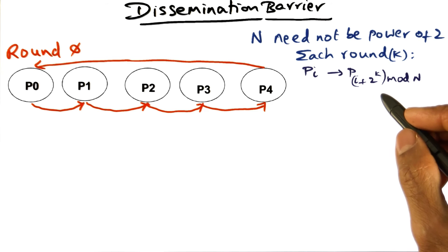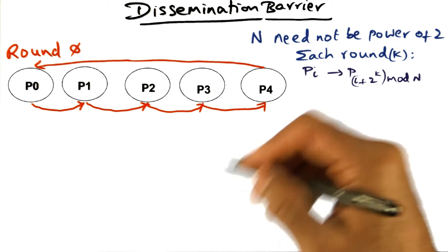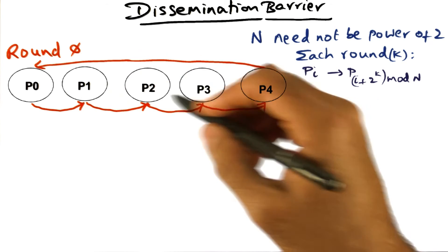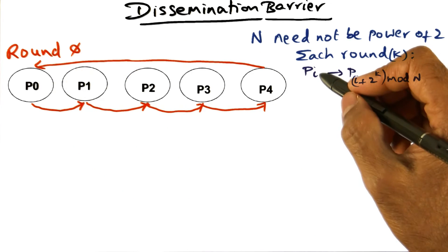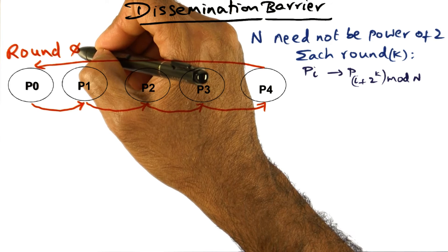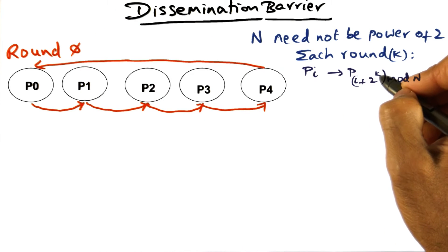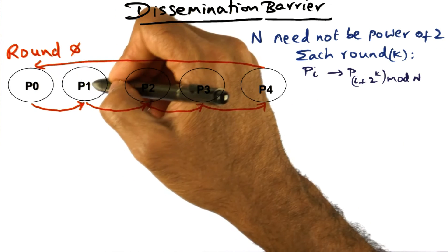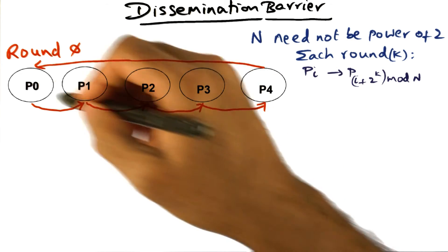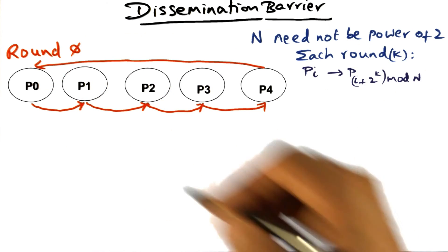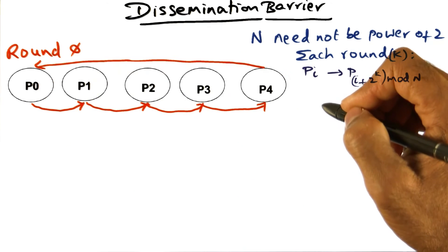The key thing that I want you to get is that in every round, a processor is sending a message to an ordained processor based on the round number. So depending on the round number, round number zero, p0 sending to p1 and so on. This completes one round of gossip.